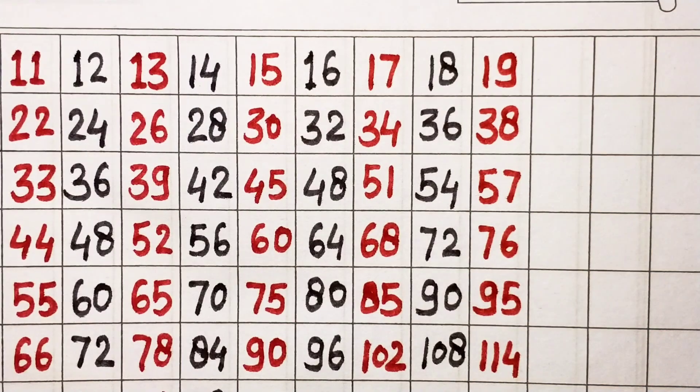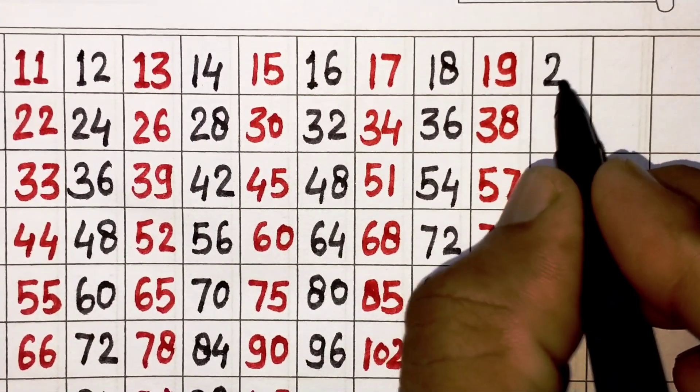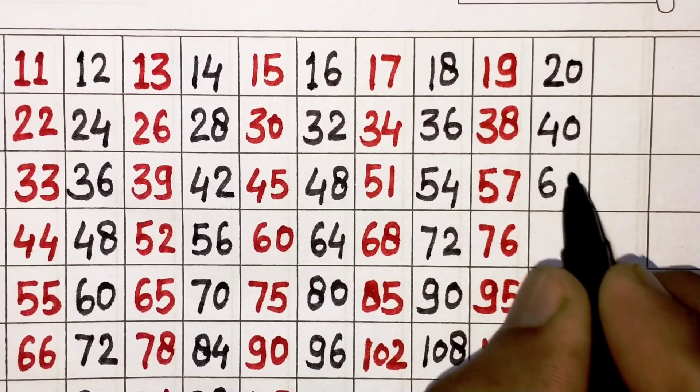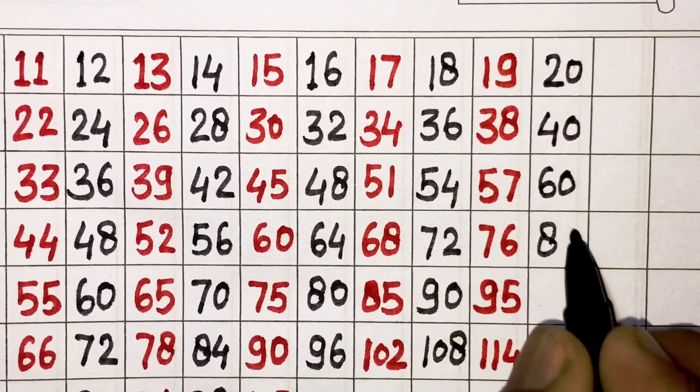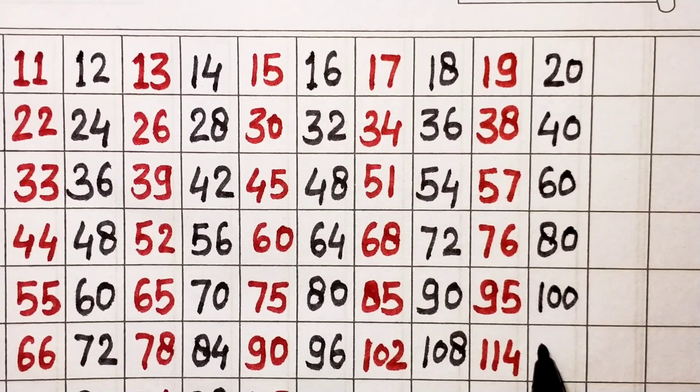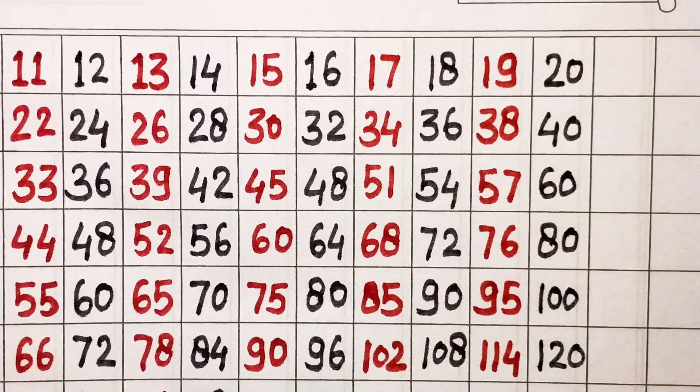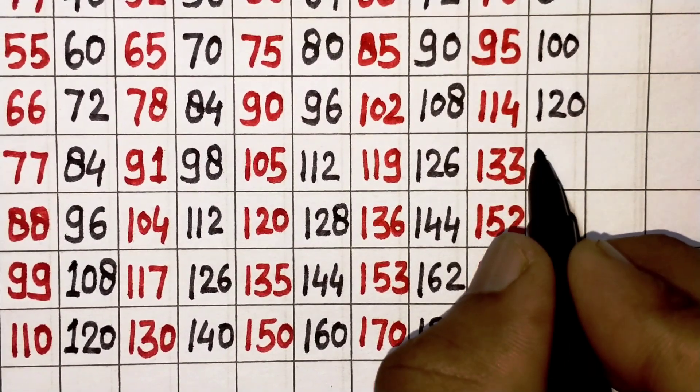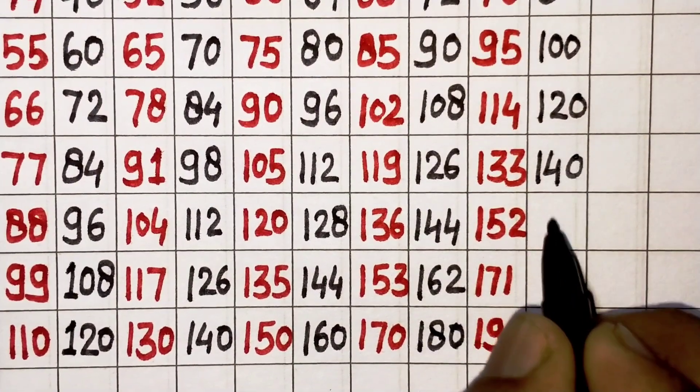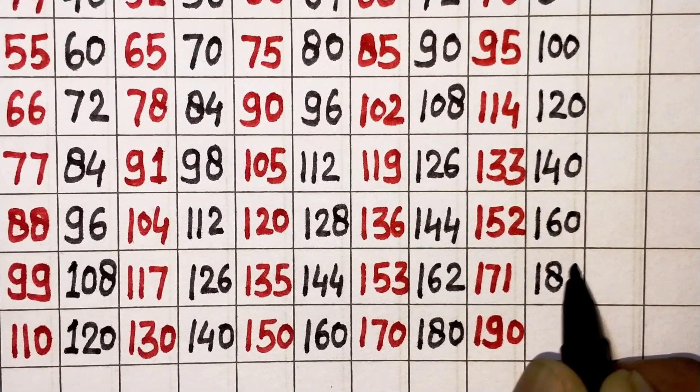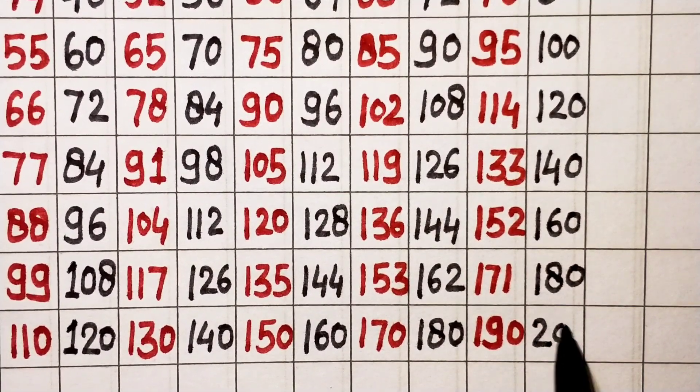20 ones are 20, 20 twos are 40, 20 threes are 60, 20 fours are 80, 20 fives are 100, 20 sixes are 120, 20 sevens are 140, 20 eights are 160, 20 nines are 180, 20 tens are 200.